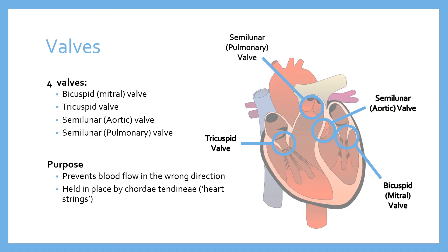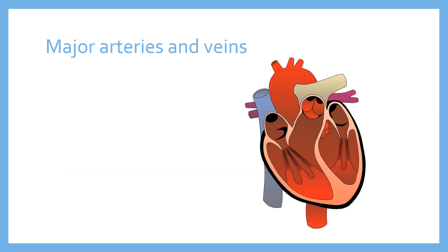The chordae tendineae are essentially tendons that keep the valves from inverting or turning inside out. They hold the valves in place so blood can only flow one way. The terms 'tricuspid', 'bicuspid', and 'semilunar' describe the shape of the valves. 'Cuspid' refers to a peak — like the cusp of a wave just before it breaks. 'Lunar' means moon-shaped. The semilunar valves are half-moon-shaped, which is what keeps them in place and allows blood to flow in only one direction.